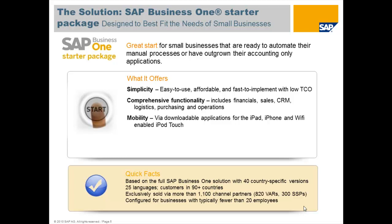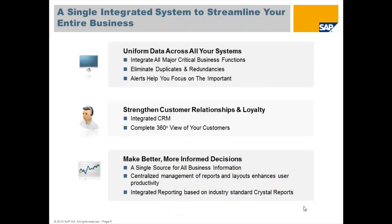The starter package is based on the full SAP Business One solution, for which we have 40 country-specific versions available in 25 languages, with customers in 90-plus countries. All those languages are available in the starter package. The software is sold exclusively via our channel partners — more than 1,100 around the world — including software solution partners who build complementary solutions. The starter package is configured specifically to meet the needs of businesses with typically fewer than 20 employees.